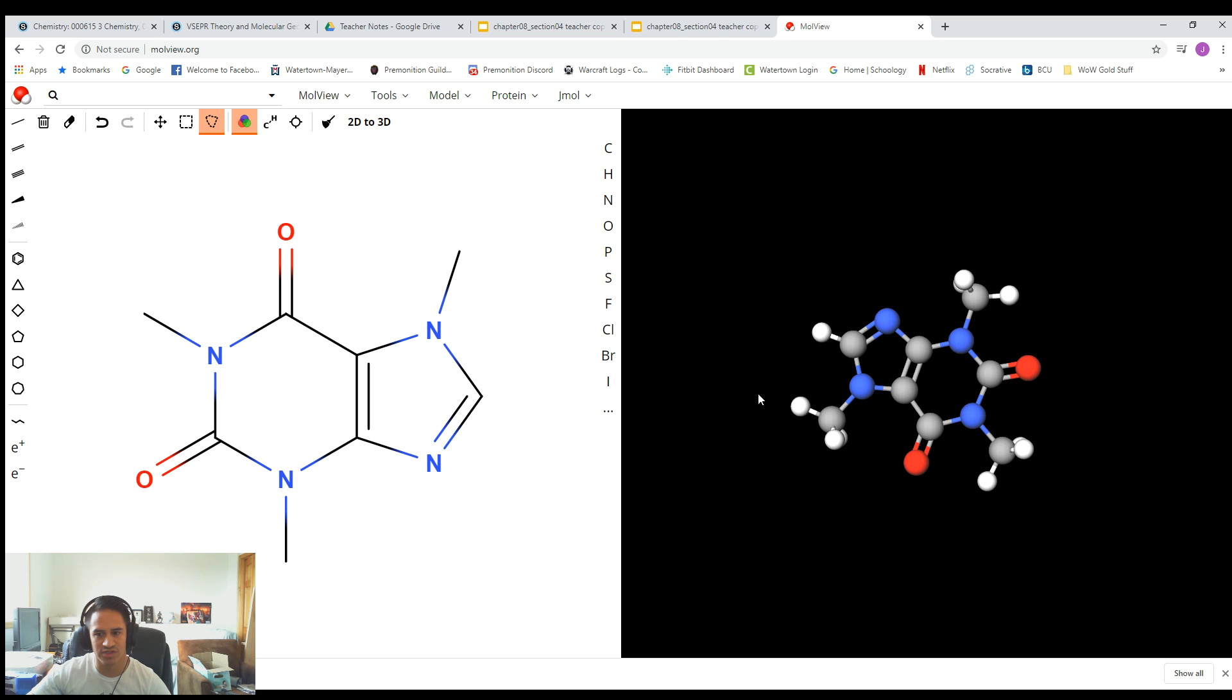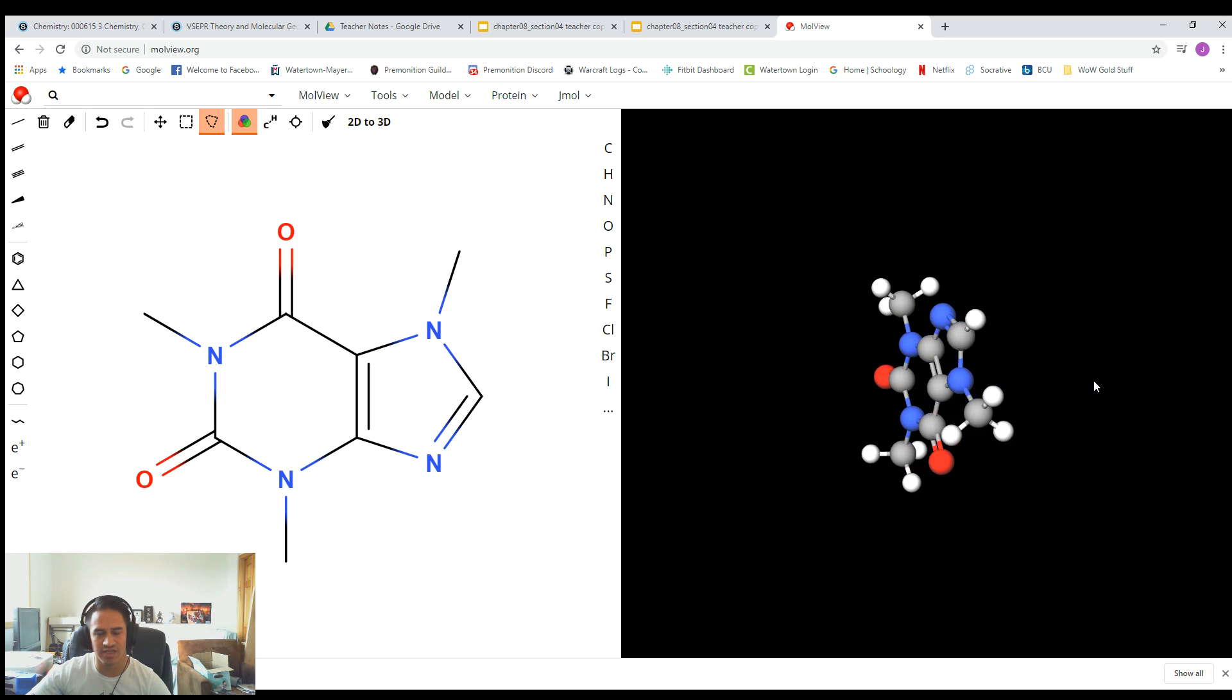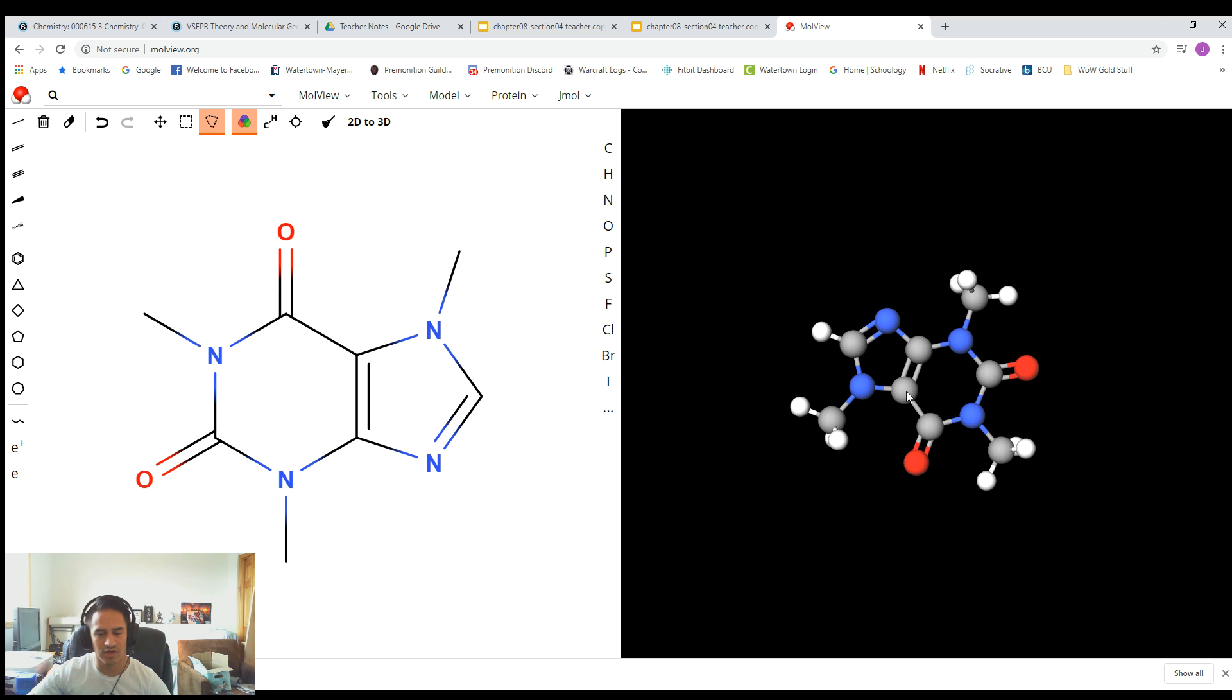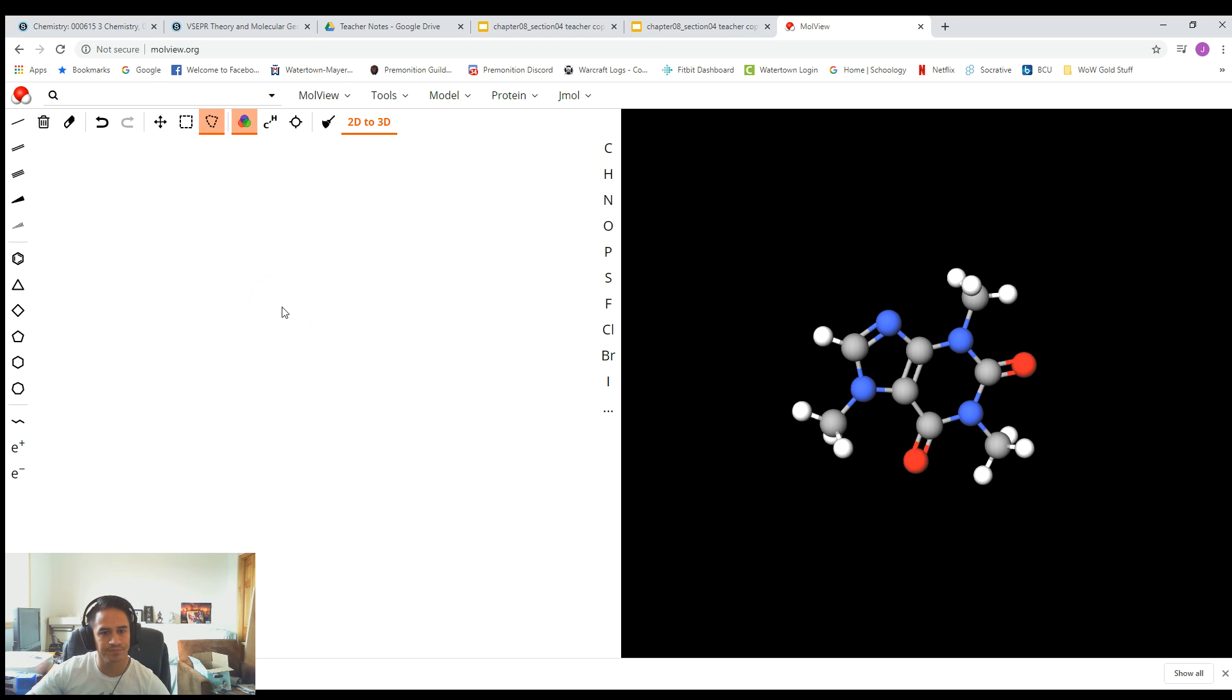It also shows a three-dimensional version of it on the right, which is kind of neat if you wanted to see what this looks like in three dimensions, which when we get into molecular geometry in Chapter 8, that actually might be pretty important. So for right now, we're going to get rid of this. On the top left, there's a little trash can button. Hit Clear All. It'll clear the whole canvas, so it's completely blank.